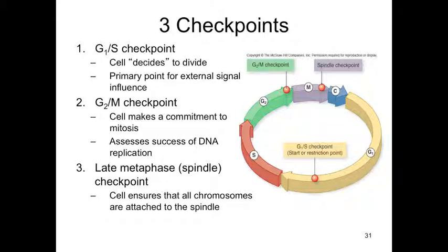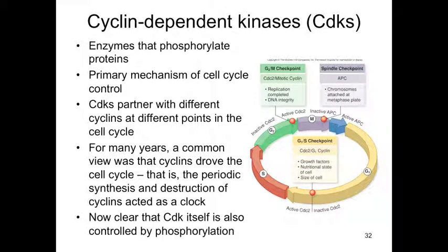Now the question is, how do these checkpoints get regulated? It's recently been discovered that there are things called CDKs, or cyclin-dependent kinases. A kinase is anything that phosphorylates things. So kinases go around and phosphorylate other molecules and activate them. This is the primary mechanism of cell cycle control. When a cyclin-dependent kinase phosphorylates proteins involved in cell division, then we enter cell division.